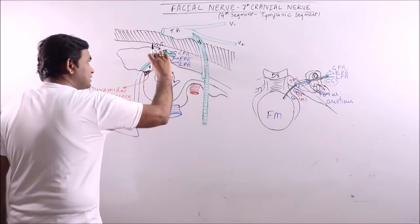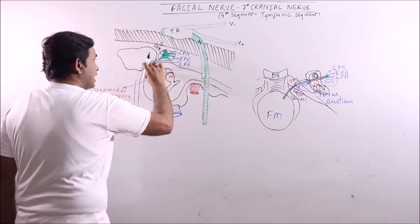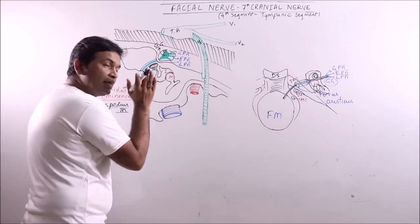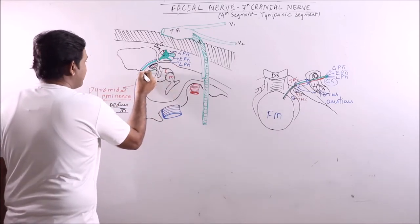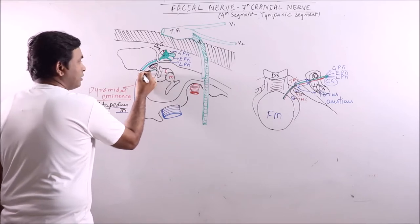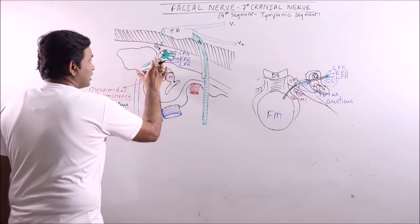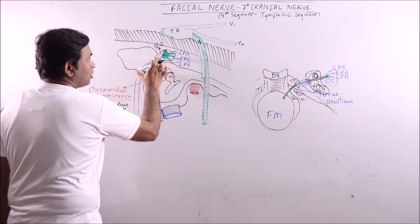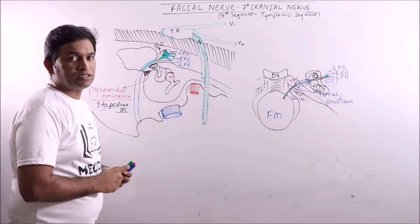This part of facial brain nerve which is still running in the facial canal, this part of facial canal runs along the medial wall of the tympanic cavity and it reaches just behind the pyramidal eminence and ends there. So, this one is the fourth segment of the facial brain nerve and it gives no branches.